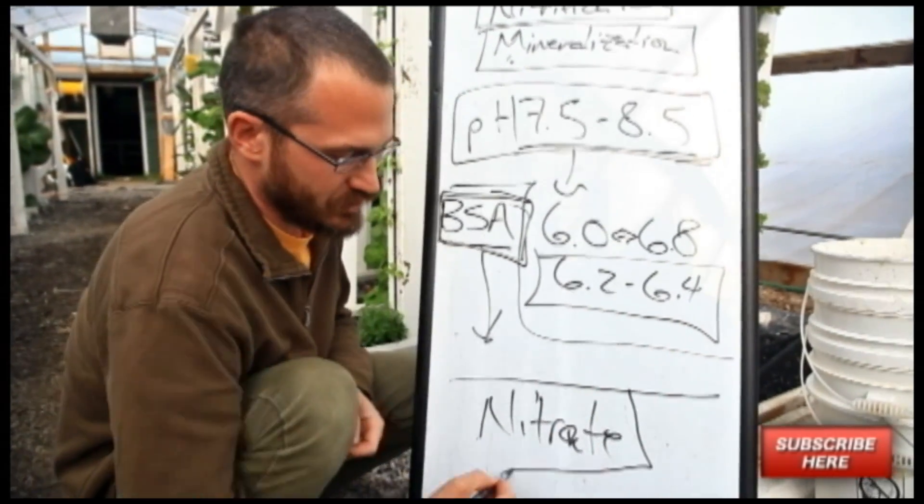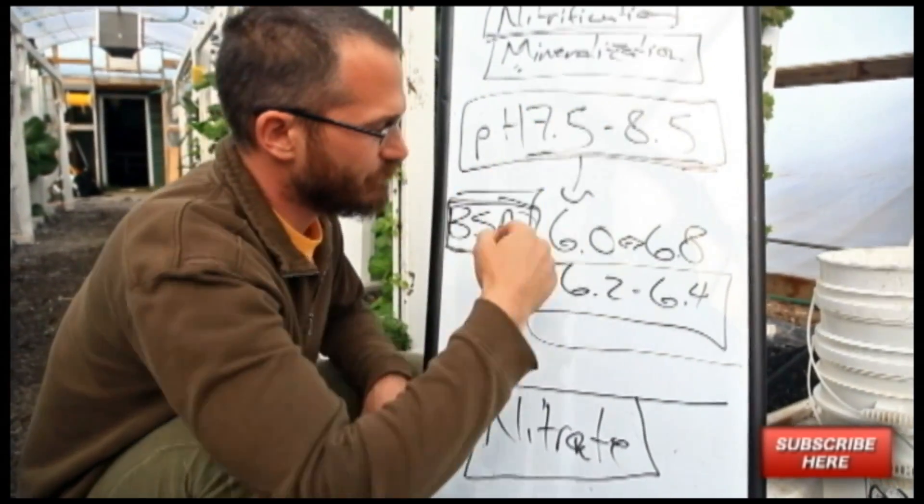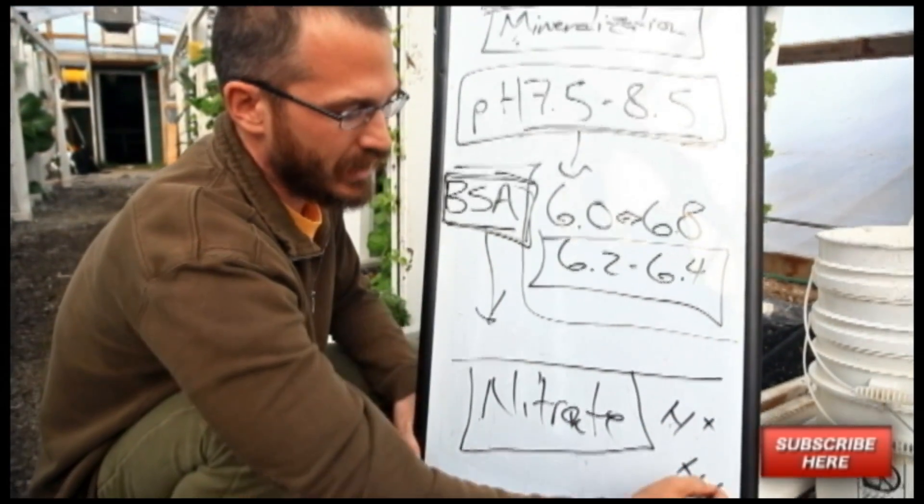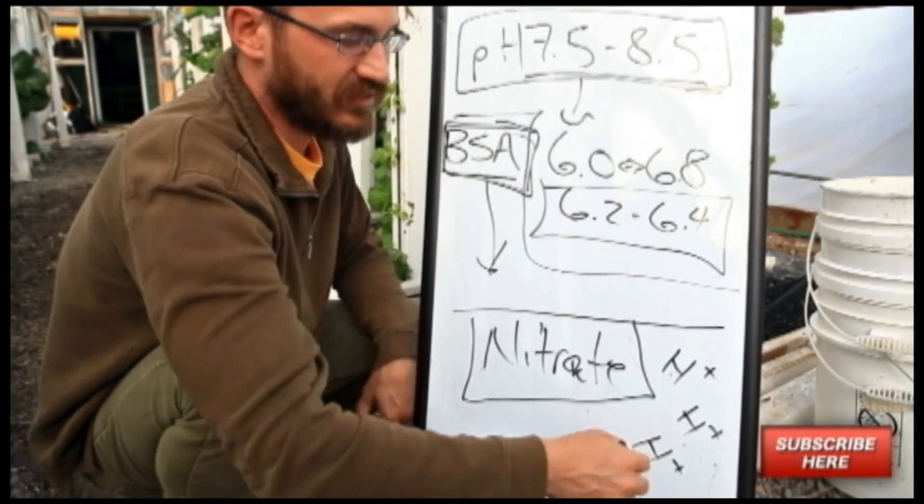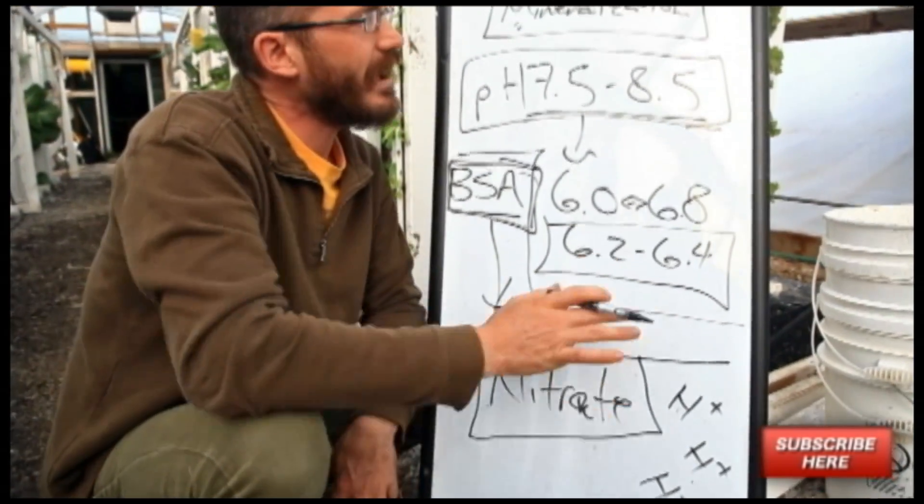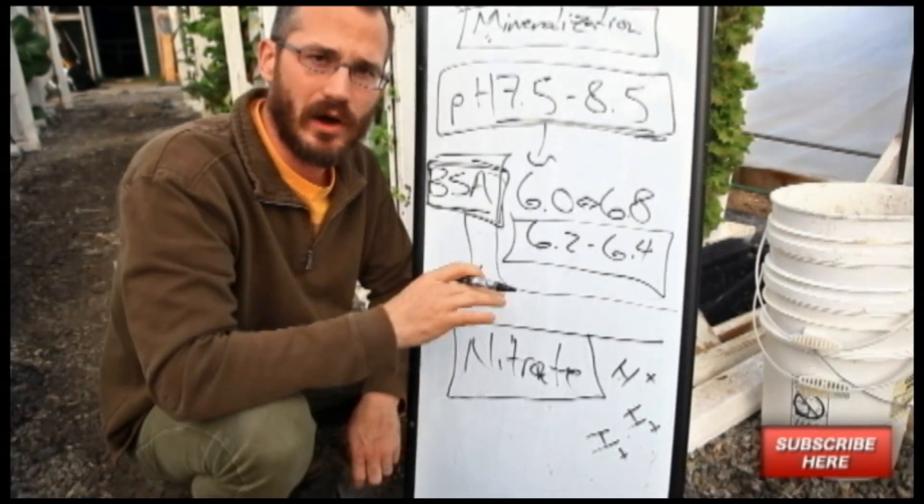In this process of producing nitrate, this process of nitrification, we're also producing hydronium ions. So as these hydronium ions are being produced, our water is acidifying. So having a really nice healthy nitrifying colony means that not only are we converting toxic ammonia